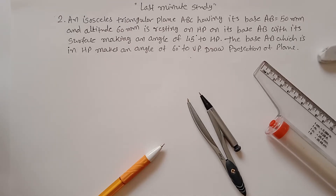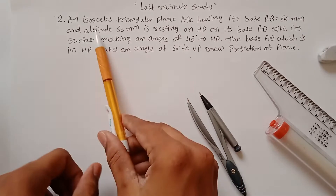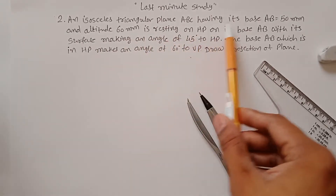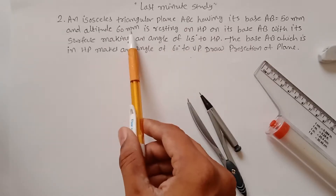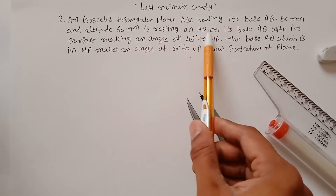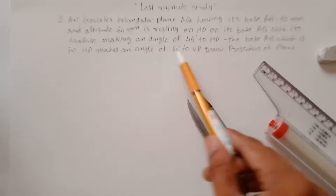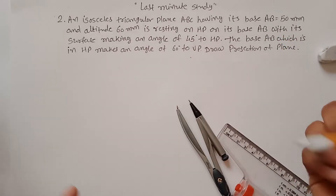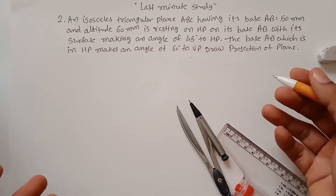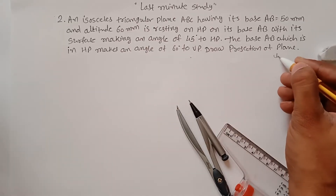Problem number two from projection of plane sheet. An isosceles triangle plane ABC having its base of 50 mm and altitude 60 mm is resting on HP on its base AB with its surface making an angle of 45 degrees with the HP. First step in projection of plane: you have to find out which plane it is.